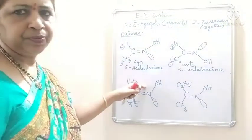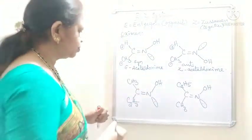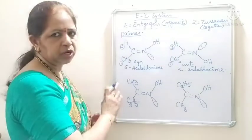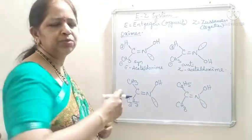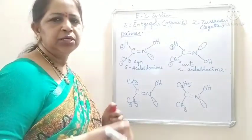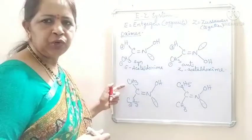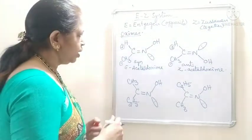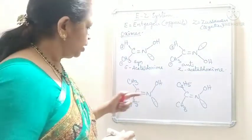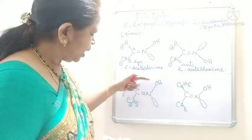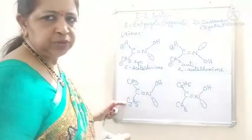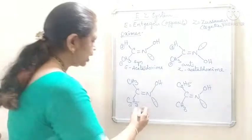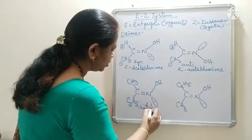Now let us see the ketoximes. In ketoximes, both are alkyl groups — not methyl groups, both are alkyl groups. So if they have both methyl groups, we cannot differentiate. So I have taken two different alkyl groups: methyl and ethyl. In ketoximes, how to assign syn and anti? If the OH group and bulky group are on the opposite side of the double bond, it is called anti-ketoxime.